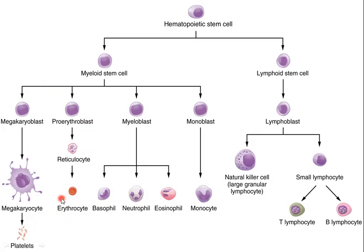Erythrocytes or red blood cells come from the reticulocyte, which is the immature RBC formed from the proerythroblast. There is a lot of ribosomal RNA in reticulocytes, which is why we see basophilic staining in reticulocytes but not in mature erythrocytes. The reticulocytes come from the proerythroblast and eventually from the myeloid stem cell.